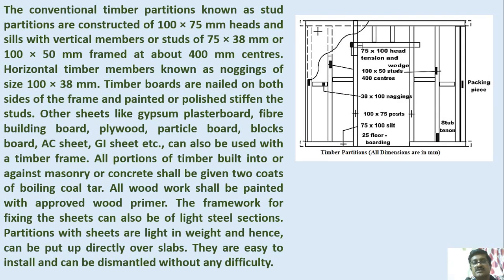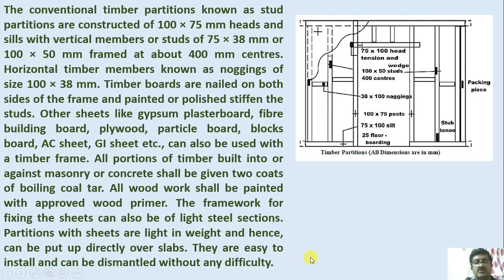Other sheets like gypsum plaster board, fiber building board, plywood, particle board, block boards, AC sheets, and GI sheets can also be used with the timber frame. All portions of timber built into masonry or concrete shall be given two coats of coal tar. All woodwork shall be painted with an approved wood primer. The framework for fixing the sheets can also be light steel sections. Partitions with sheets are light in weight and hence can be put up directly over the slabs. They are easy to install and can be dismantled without any difficulty.